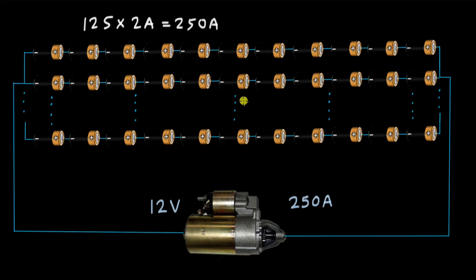This means that the total number of AA batteries for starting a car would be 125 times 11, and this is 1375 number of batteries. We can start the car with even more or less than 1375 batteries. This is not a fixed number.